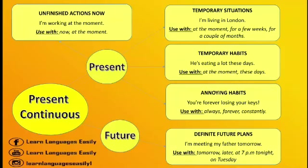There are two main uses of the present continuous: to talk about the present, and to talk about the future. We use the present continuous to specifically describe our actions right now. We are not talking in general, and we are not describing a regular action — we are describing what is currently happening.